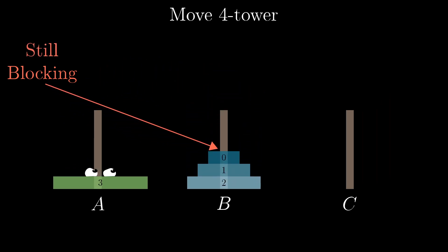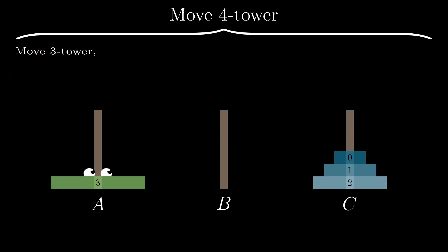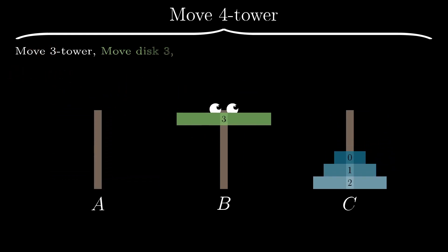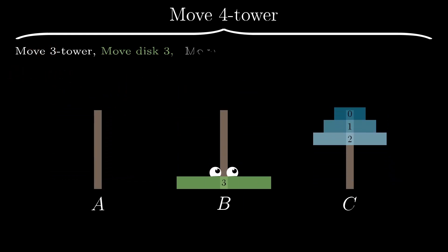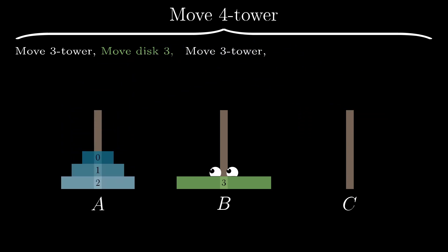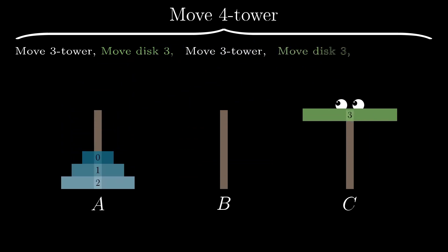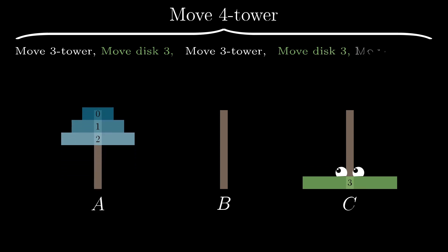So really what I want to do is take this tower of zero, one, and two, and somehow get it to thing C, then move disk B over, then get it off of C back to A, then move disk three from spindle B to spindle C, and then move that tower all the way back.